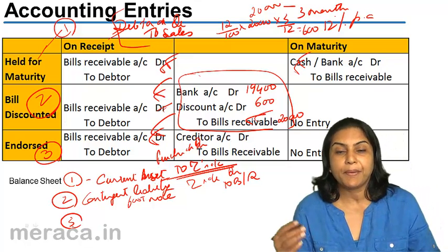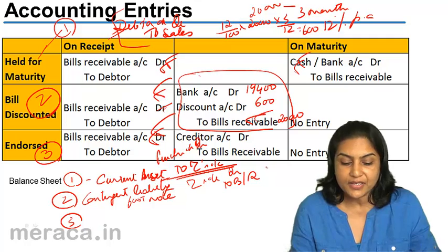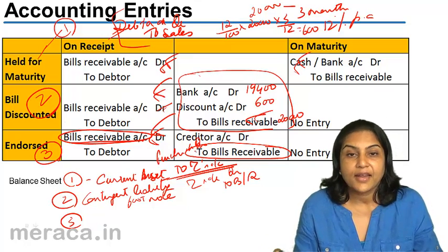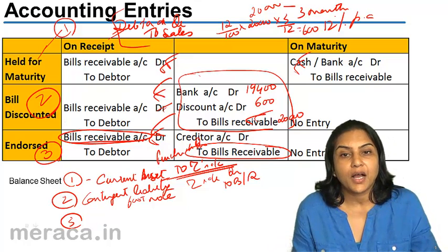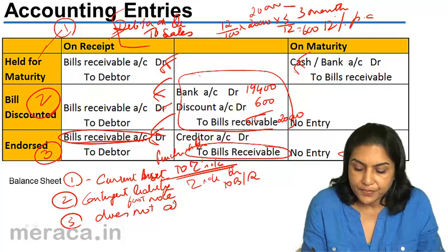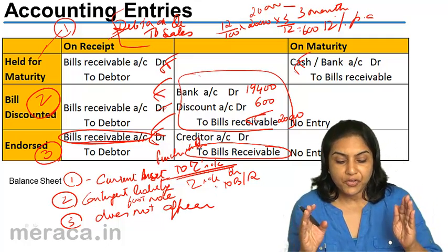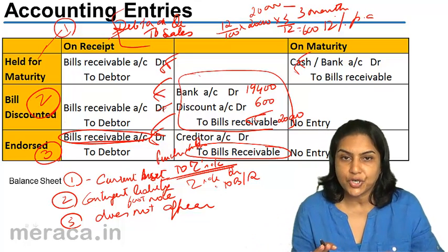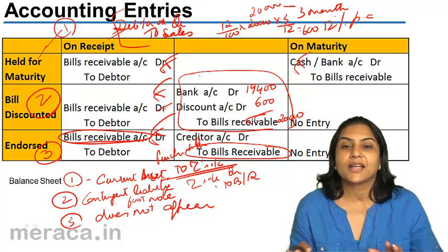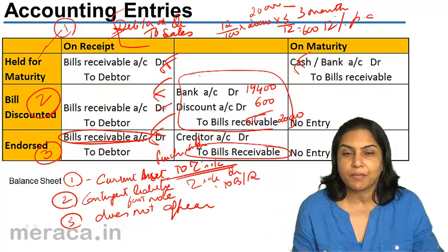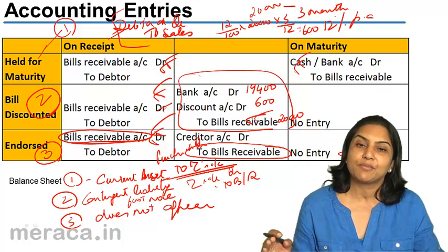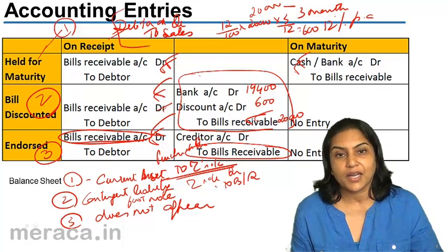If we have endorsed the bill to another person, as far as the accounting entry is concerned, bills receivable account is debited and the moment we transfer it to Z, it is credited. Therefore, there is no bills receivable account in the books and it does not appear in the balance sheet. So the position in all three instances is different: if held till maturity, it is our asset shown on the asset side of the balance sheet as a current asset; if discounted with the bank, it appears as a footnote to the balance sheet as an item of contingent liability; if endorsed, it does not appear in our books at all.